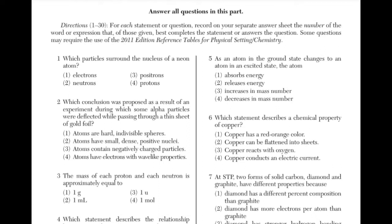Which particles surround the nucleus of a neon atom? The answer is electrons. The nucleus is made up of protons and neutrons, and around the nucleus are electrons.